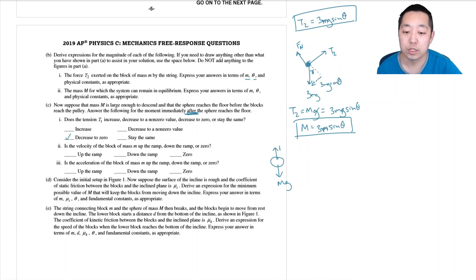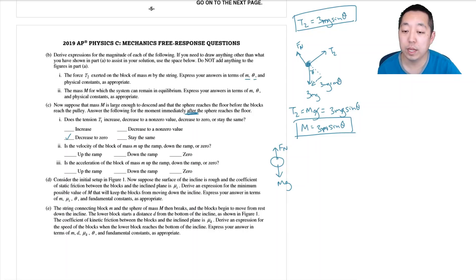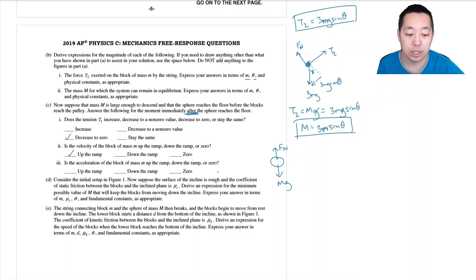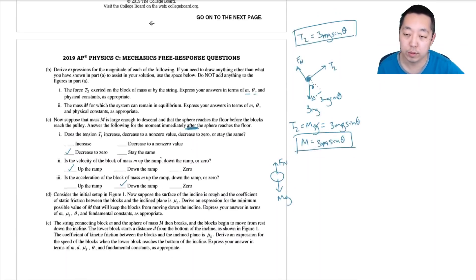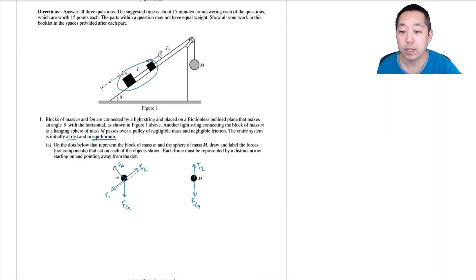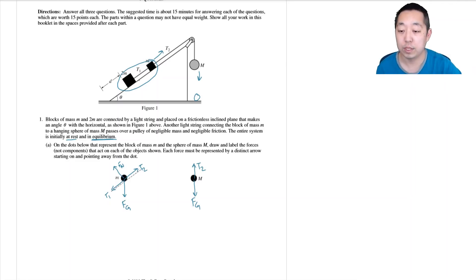Once the sphere reaches the floor, the normal force equals Mg and tension doesn't need to do anything. Is the velocity of block mass m up the ramp, down the ramp, or zero? It is still up the ramp, because it had an initial velocity. Even though tension drops to zero, the velocity continues at the moment the sphere hits the ground. The acceleration then becomes directed down the ramp, since T2 is gone and the net force is downward.